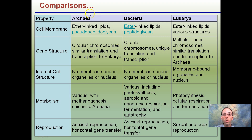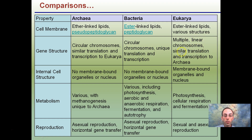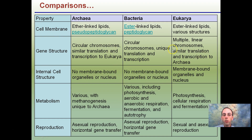Some comparisons: archaea, bacteria, and eukarya — focusing on the first two, both are prokaryotes. Key differences include gene structure — both have circular chromosomes. Unlike eukarya, which contain defined organelles, there are no membrane-bound organelles or a nucleus in both archaea and bacteria. These are the main distinguishing features.